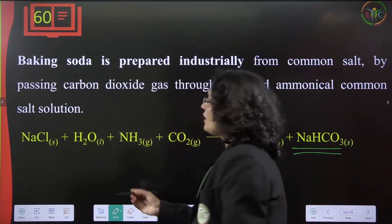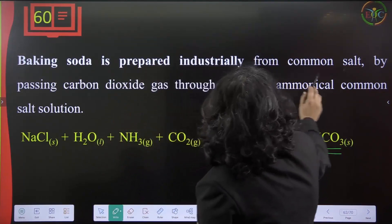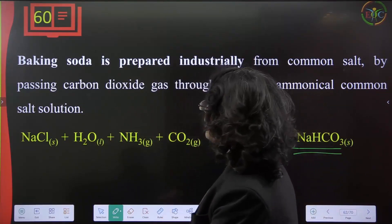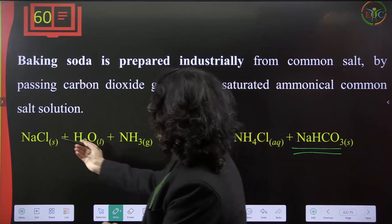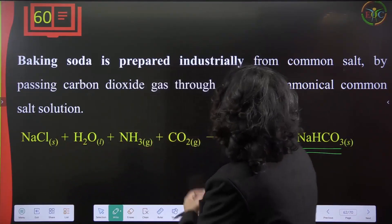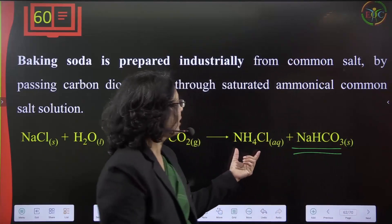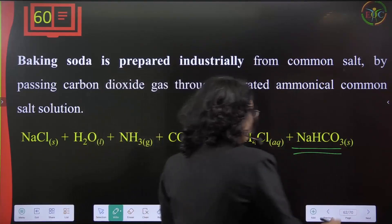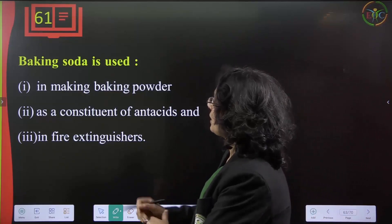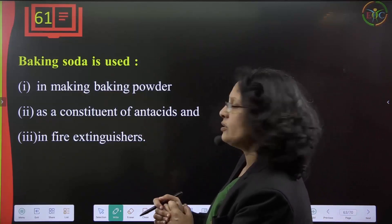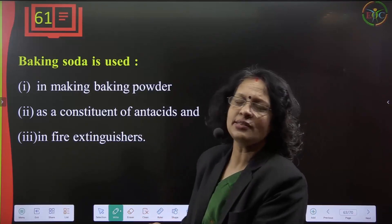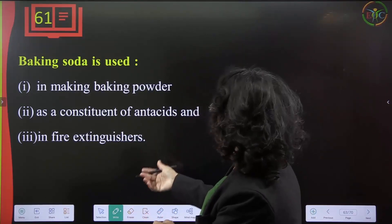Sodium bicarbonate is prepared from common salt by passing carbon dioxide gas through a saturated ammoniacal salt solution. This gives ammonium chloride and sodium bicarbonate. Other uses of sodium bicarbonate include making baking powder, as a constituent of antacids, and in fire extinguishers.